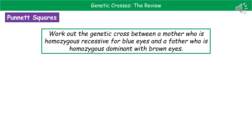Here's a sample question: work out the genetic cross between a mother who is homozygous recessive for blue eyes and a father who is homozygous dominant with brown eyes. Pick out the key bits of information — it helps to highlight or underline as you read. Note that the mother is homozygous recessive and the father is homozygous dominant; this will help with the next step.